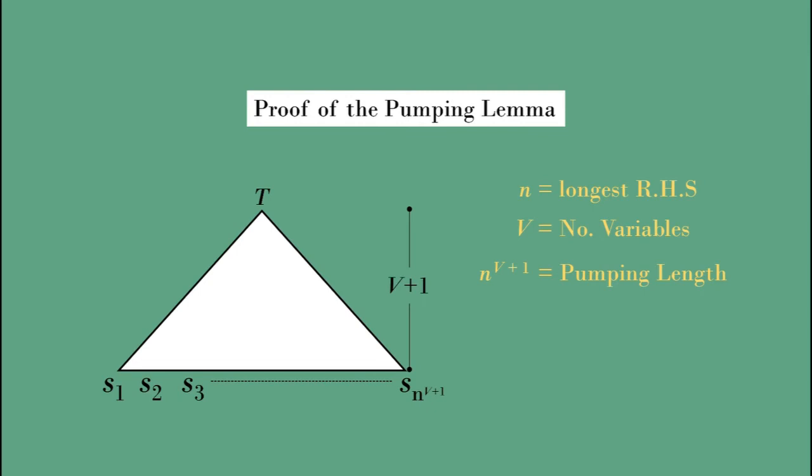To see how to pump any such string S, we look at its parse tree. We know that the tree must be at least V plus 1 high, so its longest path from the root to a leaf has at least V plus 1, has a length at least V plus 1.